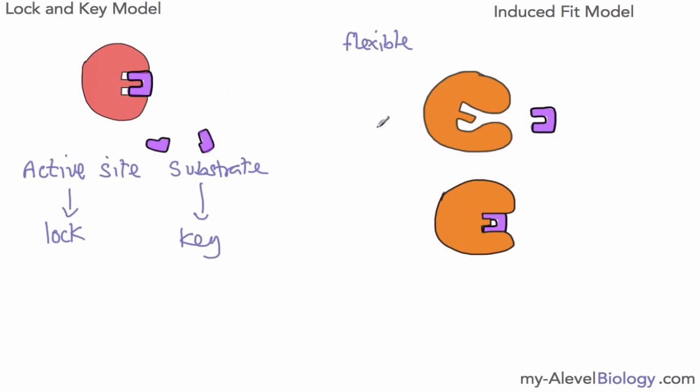Now what's the difference between the lock and key and the induced fit? Well the main one is that this one suggests that the enzyme shape is very rigid, it's unchanging, whereas this one seems to suggest there's some level of flexibility. So you should be able to explain what these two models are in terms of the way enzymes work.